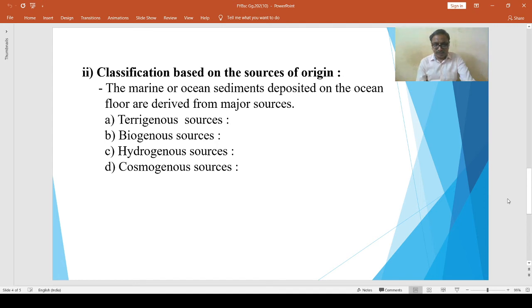Blue mud: The compounds of iron impart this color to the mud. It contains about 35% calcium carbonate. It is found along the Atlantic and Mediterranean Sea.